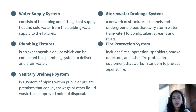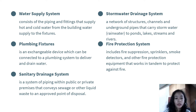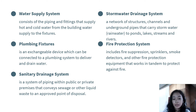The sanitary drainage system is a system of piping within public or private premises that conveys sewage or other liquid waste to an approved point of disposal. The storm water drainage system is a network of structures, channels, and underground pipes that carries storm water or rain water to ponds, lakes, streams, and rivers. Remember that the sanitary drainage system carries waste water and delivers it to a treatment plant, while the storm water drainage system collects rain water and directs it to bodies of water.